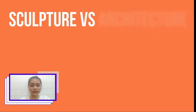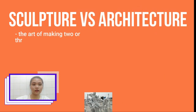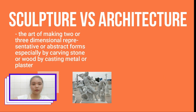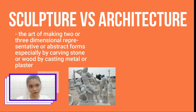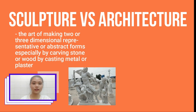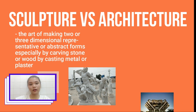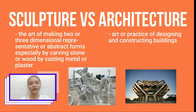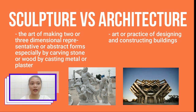First of all, we must know what sculpture and architecture are. Sculpture is the art of making two- or three-dimensional representative or abstract forms, especially by carving stone or wood or by casting metal or plaster. Meanwhile, architecture is the art or practice of designing and constructing buildings.